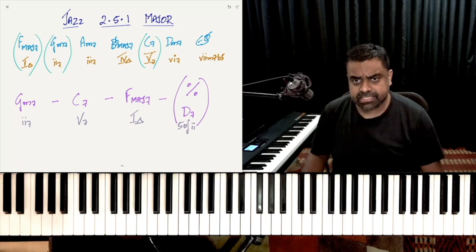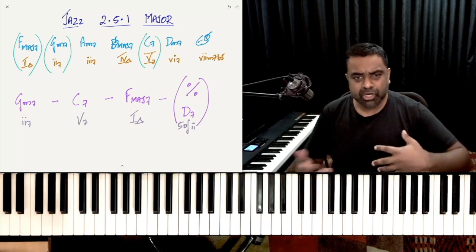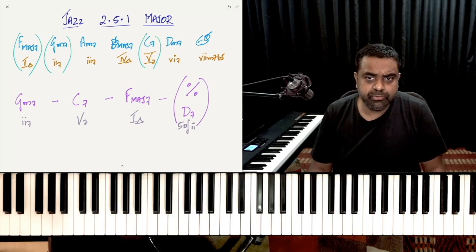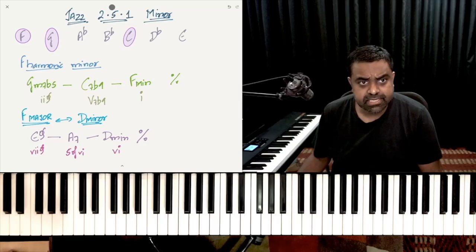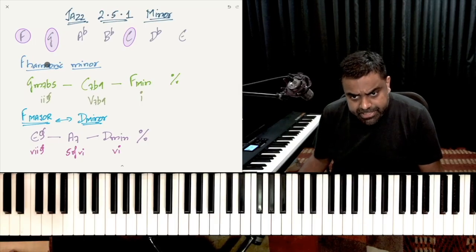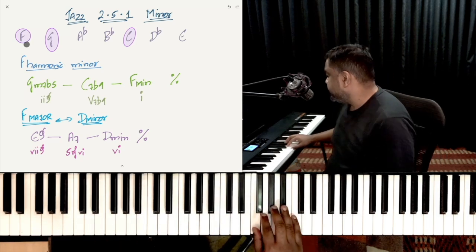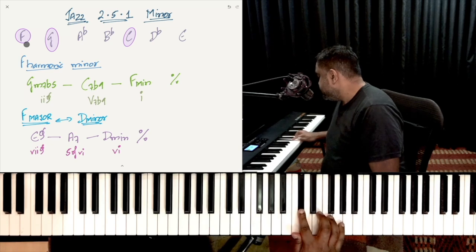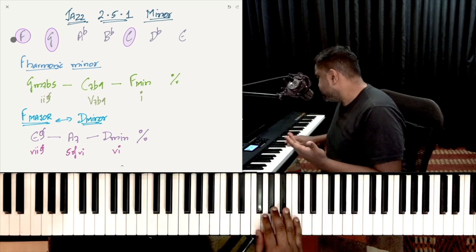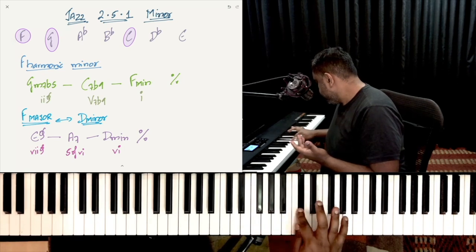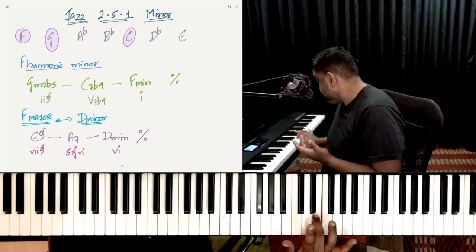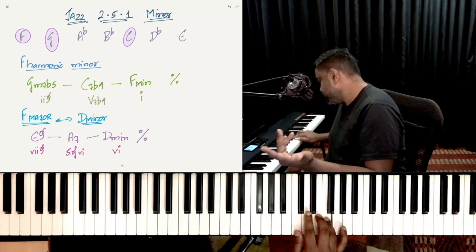The next part follows this immediately — the Jazz 2-5-1 minor. This could be considered as part of the minor scale, or you could build it from within the major scale. If you take the F harmonic minor — F, G, A flat, B flat, C, D flat, E, F — that's your flat 3, flat 6, raised 7th with respect to the natural minor. So that's your F harmonic minor.